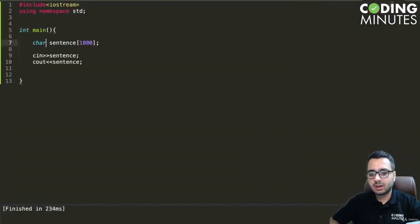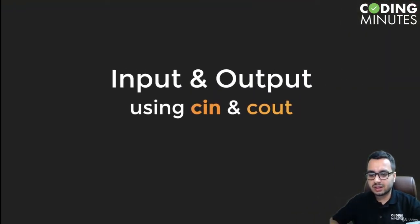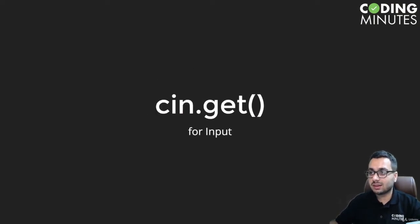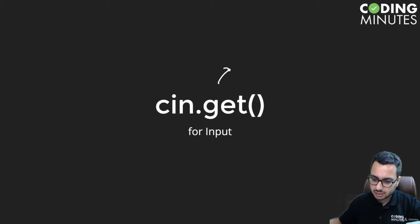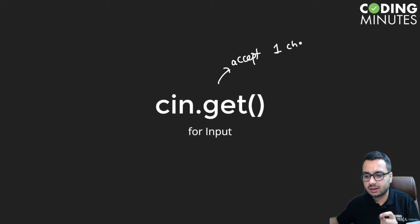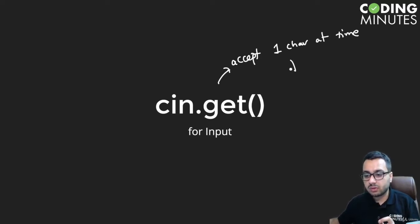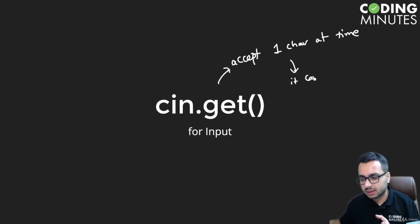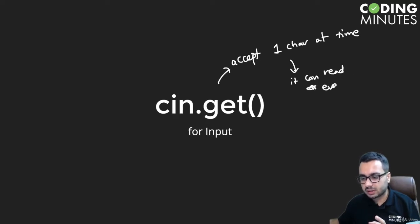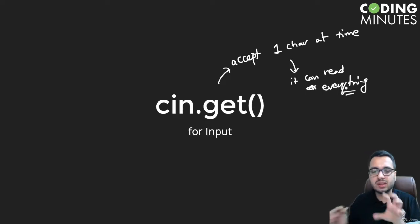Now I will teach you a different function known as cin.get(). What it does is it accepts one character at a time — it only reads one character at a time — but it will read all types of characters including spaces and everything.